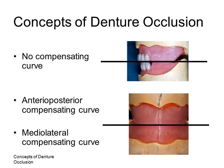Posterior teeth may be set on a flat occlusal plane. Alternatively, the posterior teeth may be set along a curved line known as a compensating curve. The addition of a compensating curve may enable balance to be obtained with various tooth forms and arrangements. There are the anterior-posterior compensating curve and the medial-lateral compensating curve.